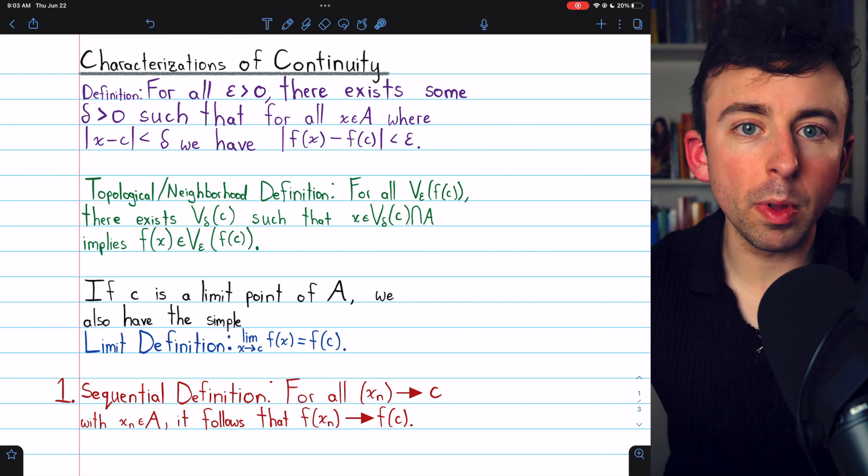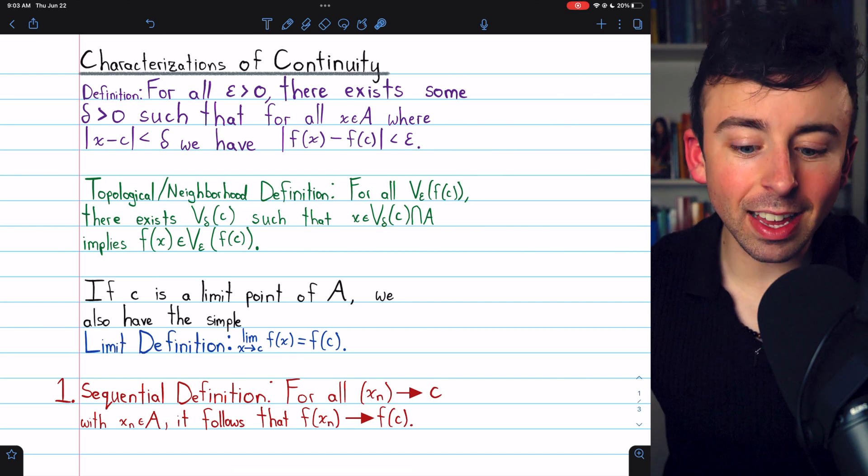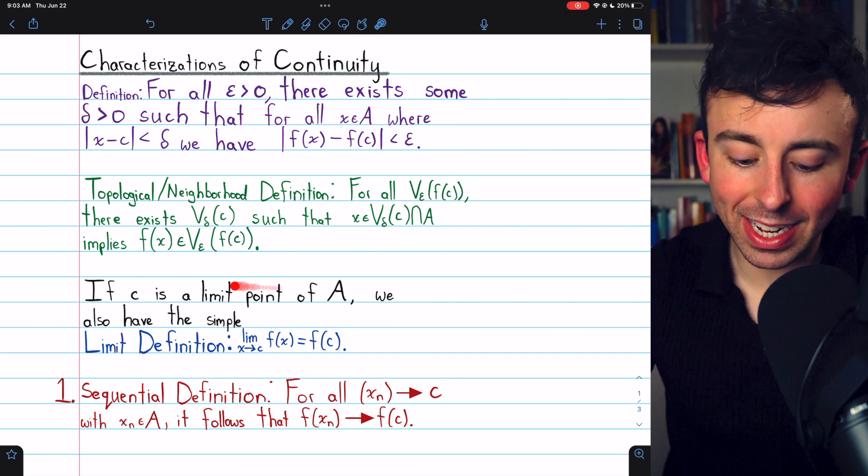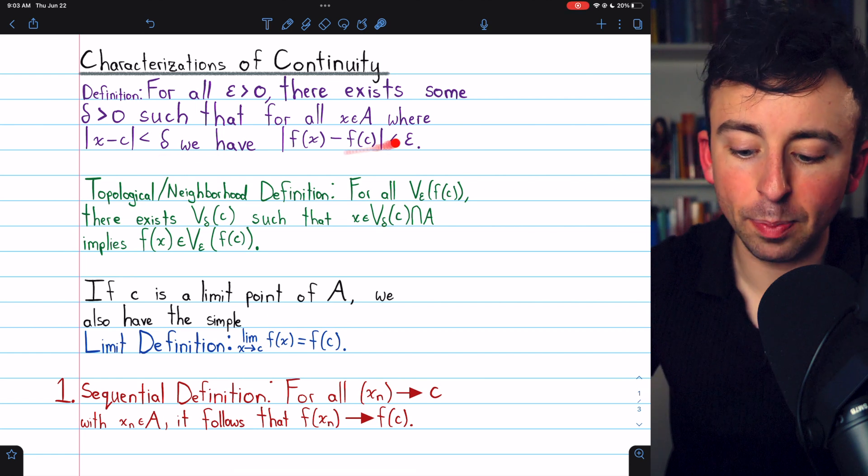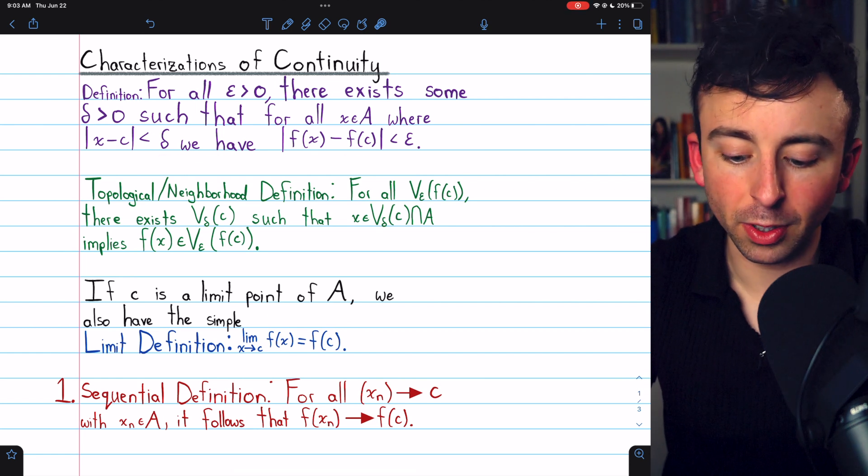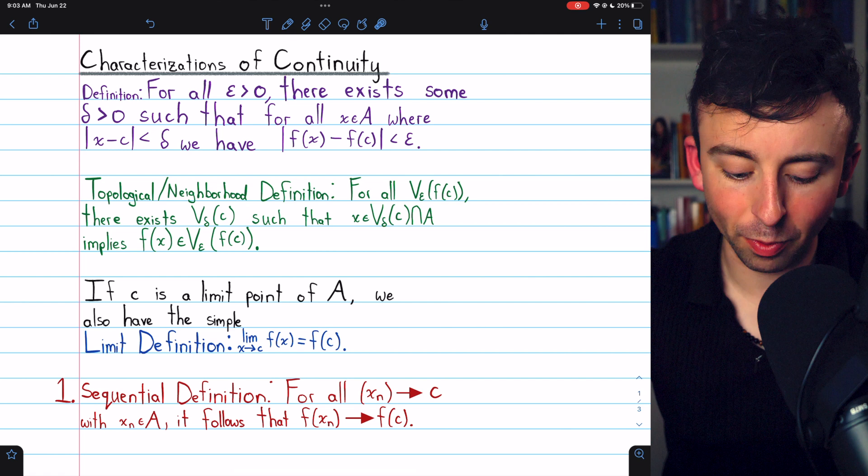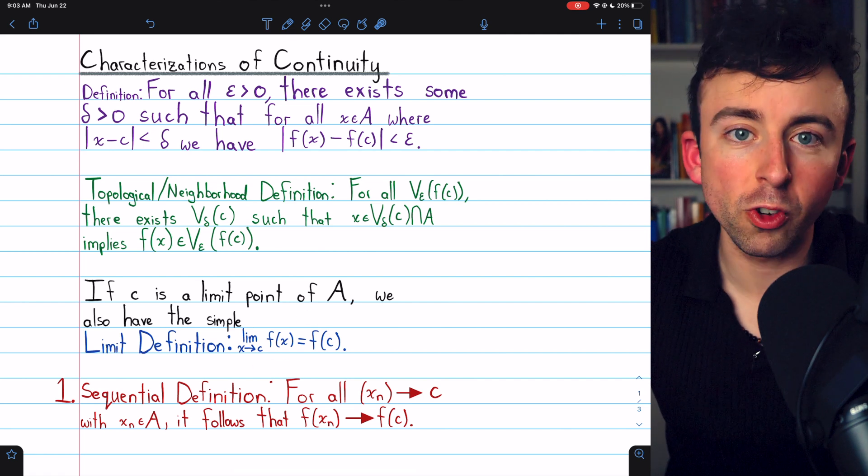When c is a limit point, and so this limit definition of continuity applies, it's very obviously equivalent to the epsilon-delta definition. The epsilons and deltas really just come from the definition of a functional limit.